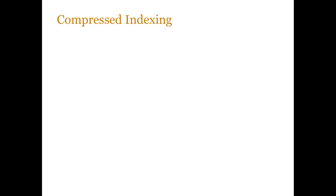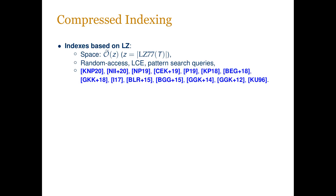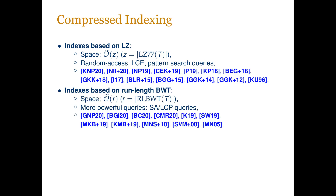For each of the listed compression types there exists a corresponding compressed index. The index based on LZ77 compression achieves space equal to the size of the output of the LZ77 compression algorithm, up to logarithmic factors, and supports queries such as random access to the input text, longest common extension, and pattern search. The index based on the Burrows-Wheeler Transform achieves, again up to logarithmic factors, space of r, where r is the size of the output of run-length BWT compression.